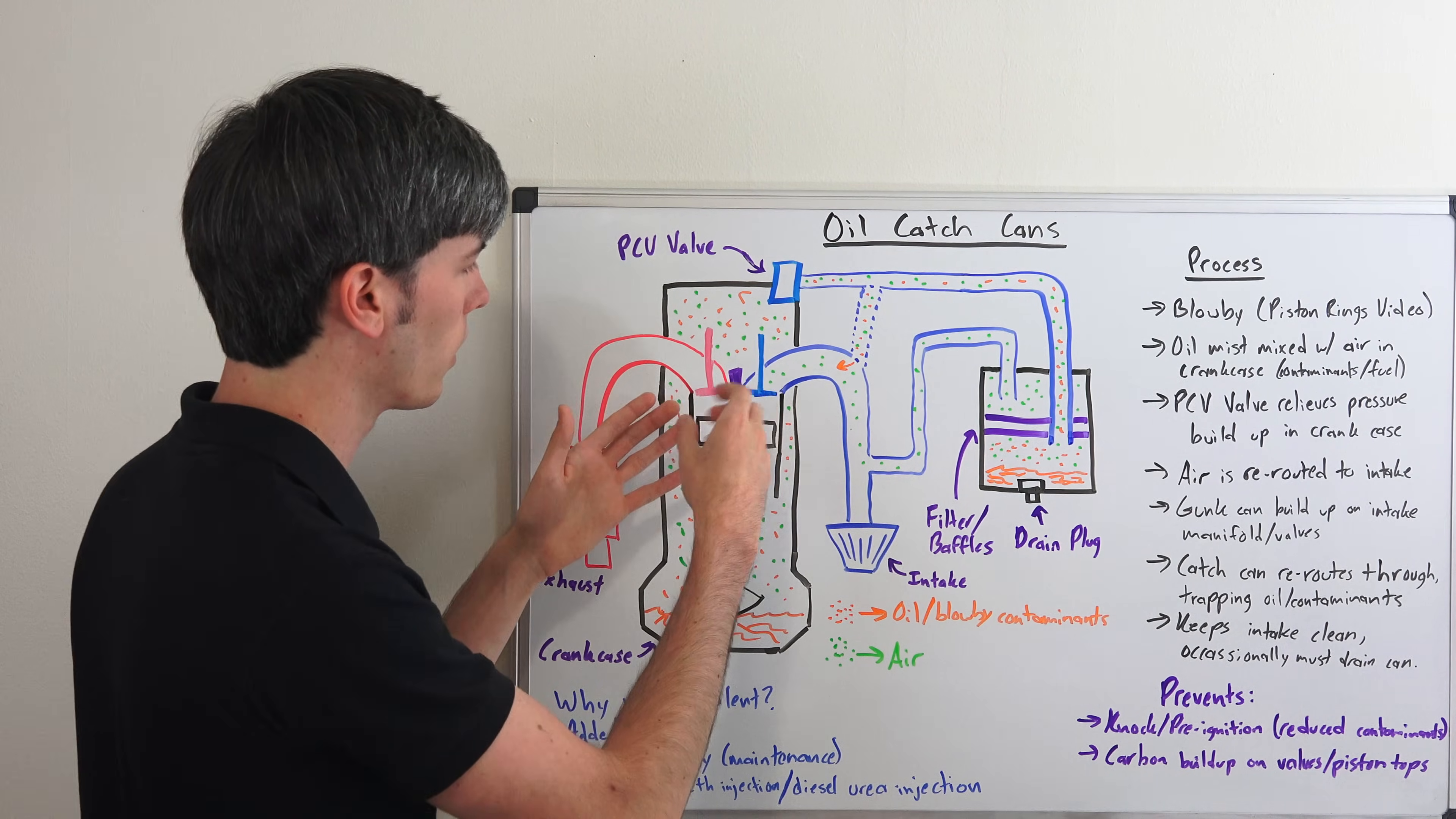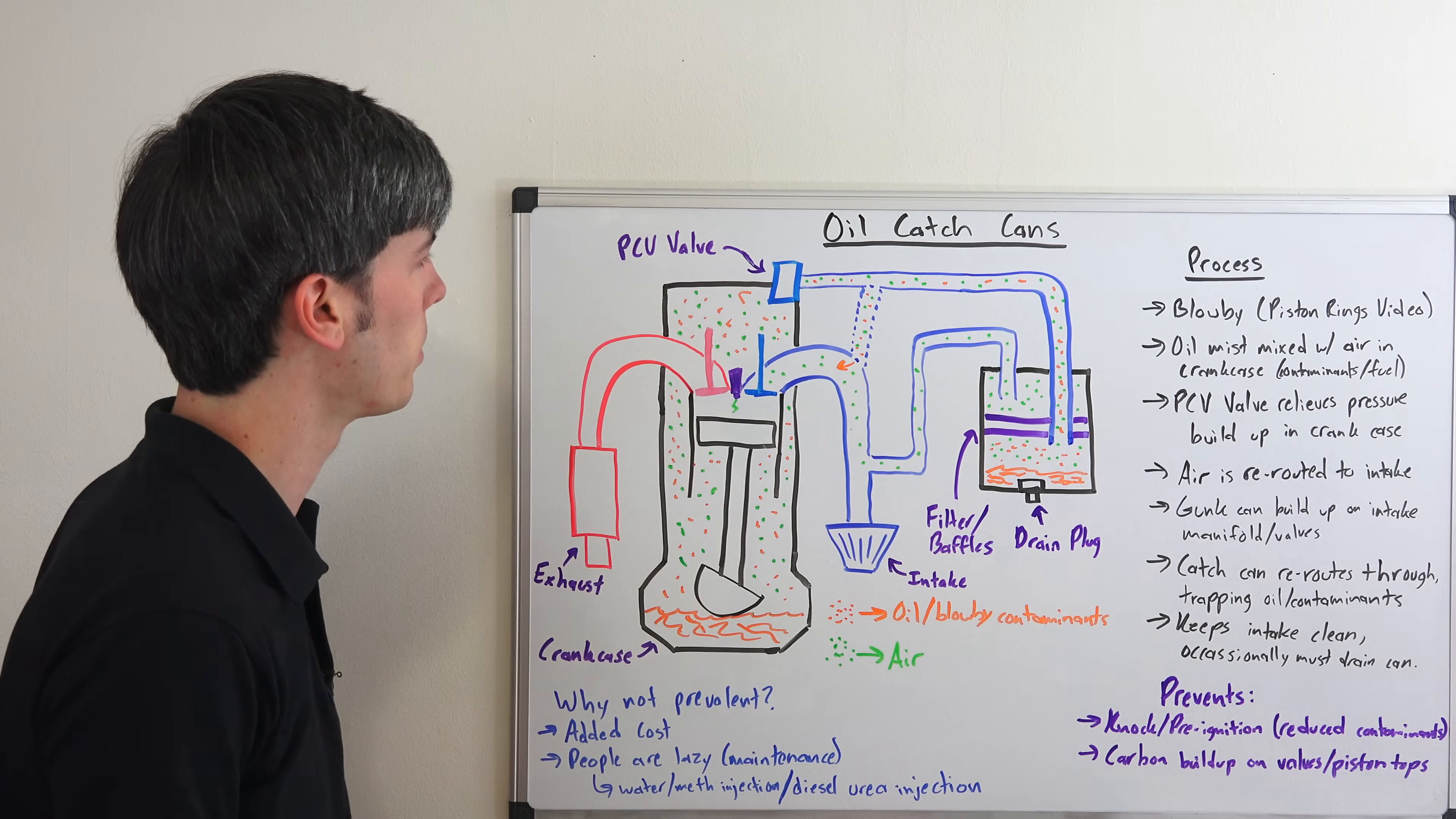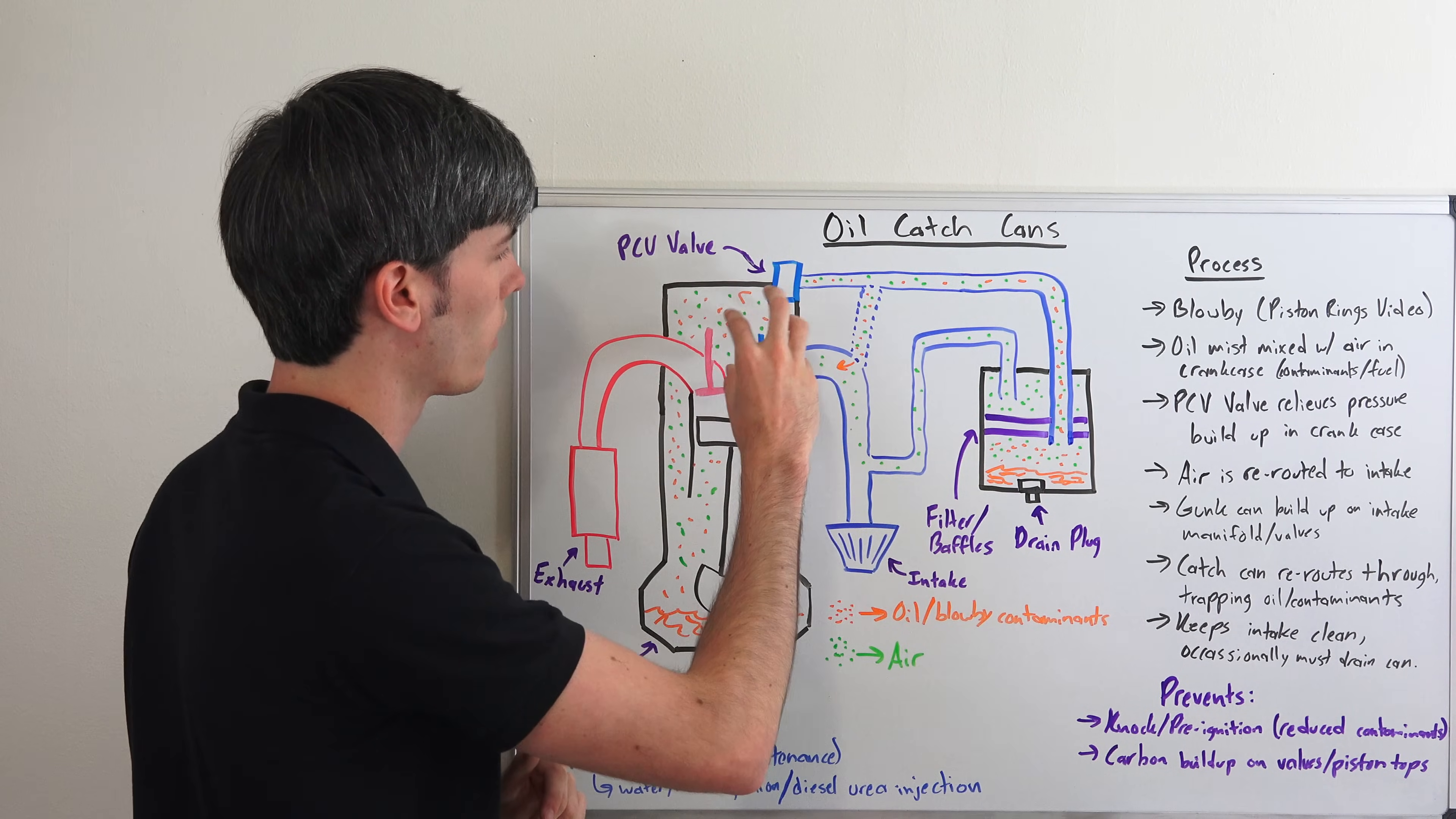Now if you have blow-by occur for a significant duration, of course you're going to build up the pressure within this engine block. So you need to be able to let that pressure escape. That's why we have a PCV valve, or a positive crankcase ventilation valve. What that does is it allows that air to escape.